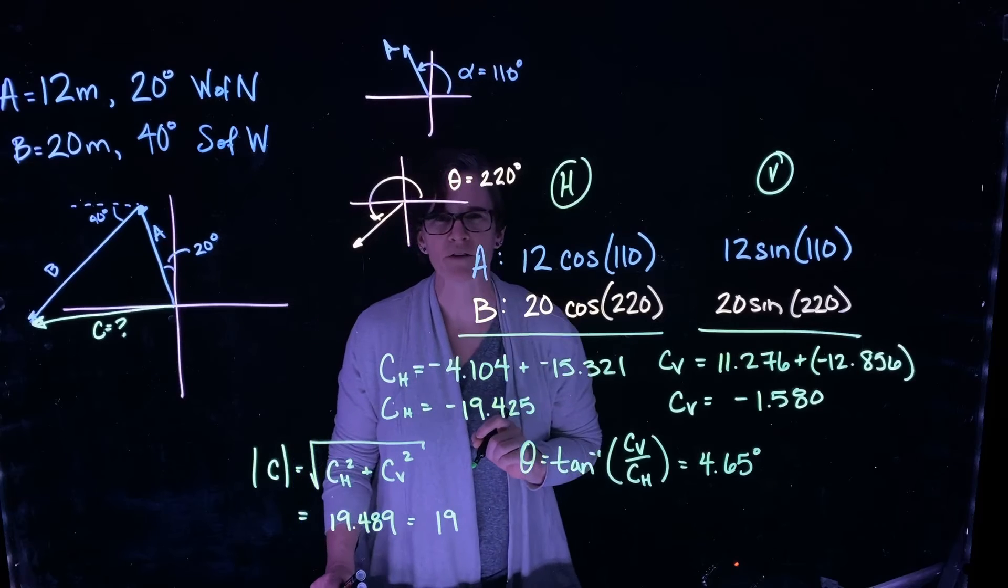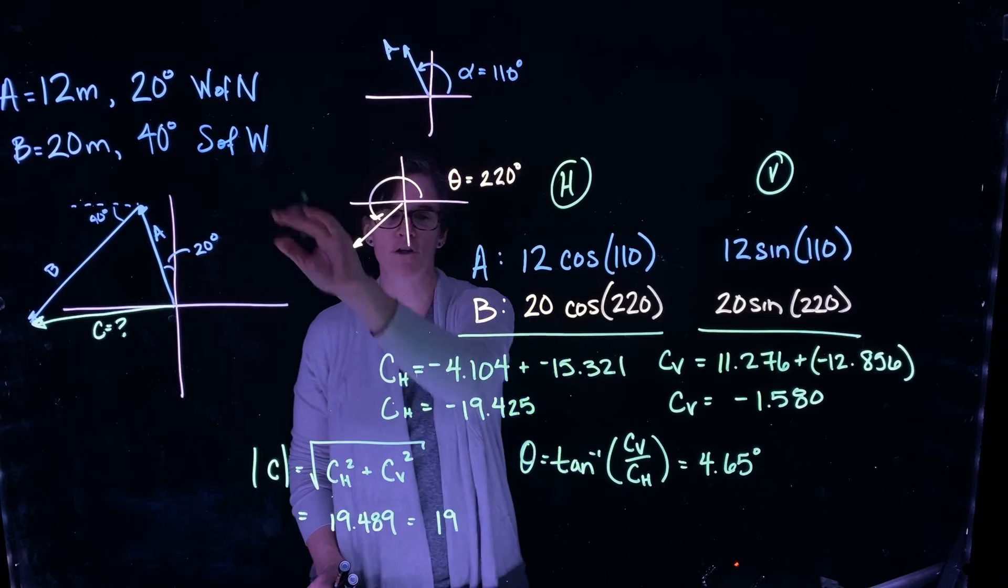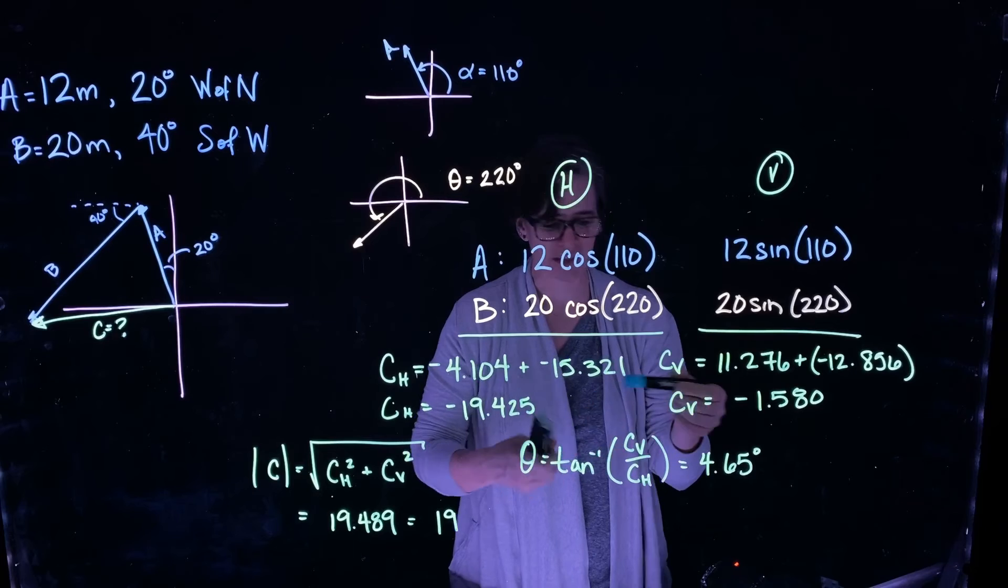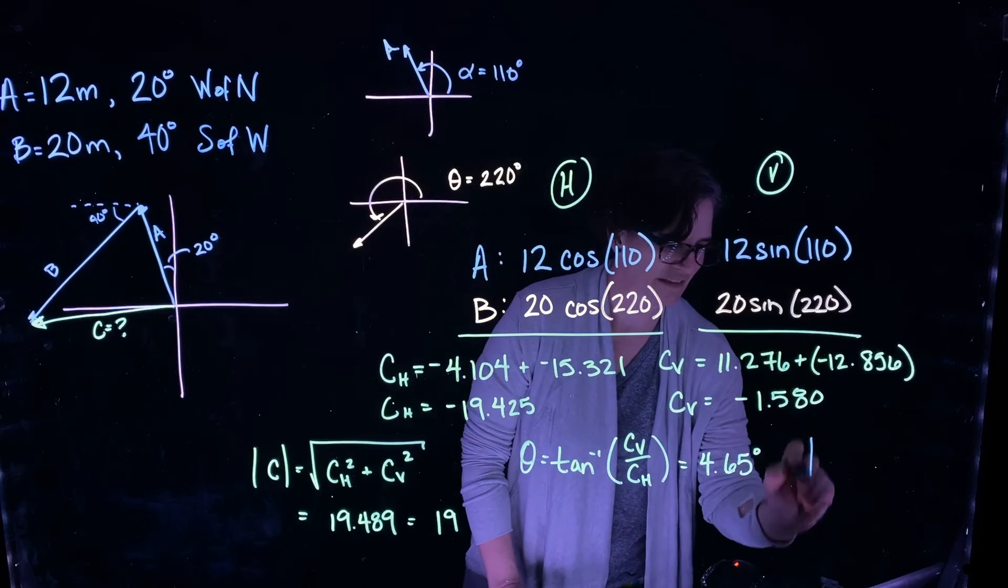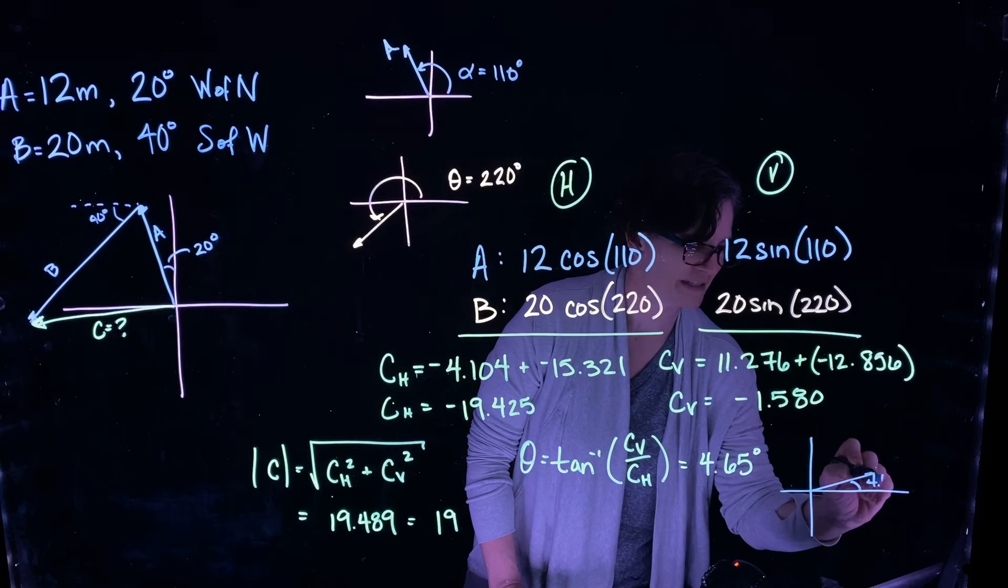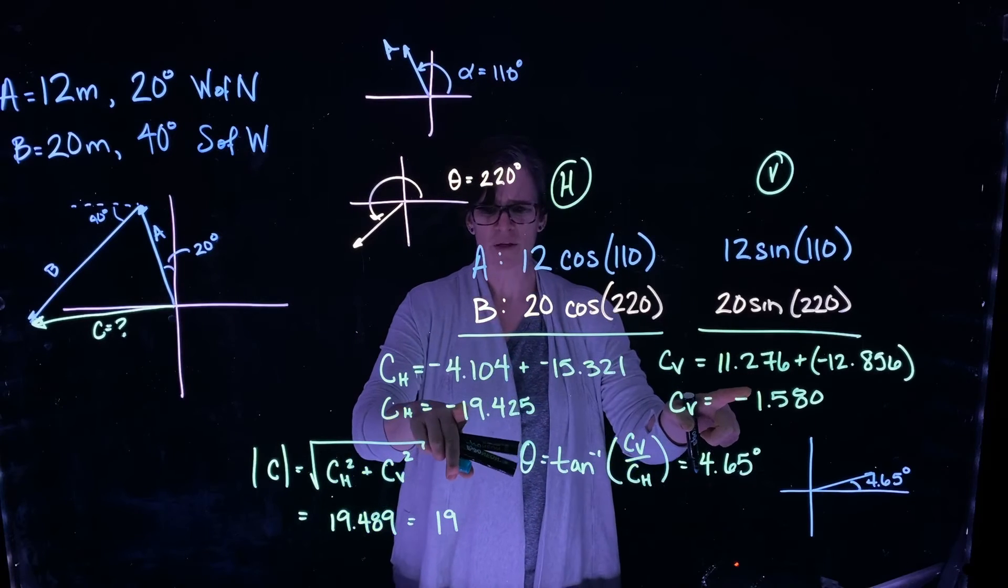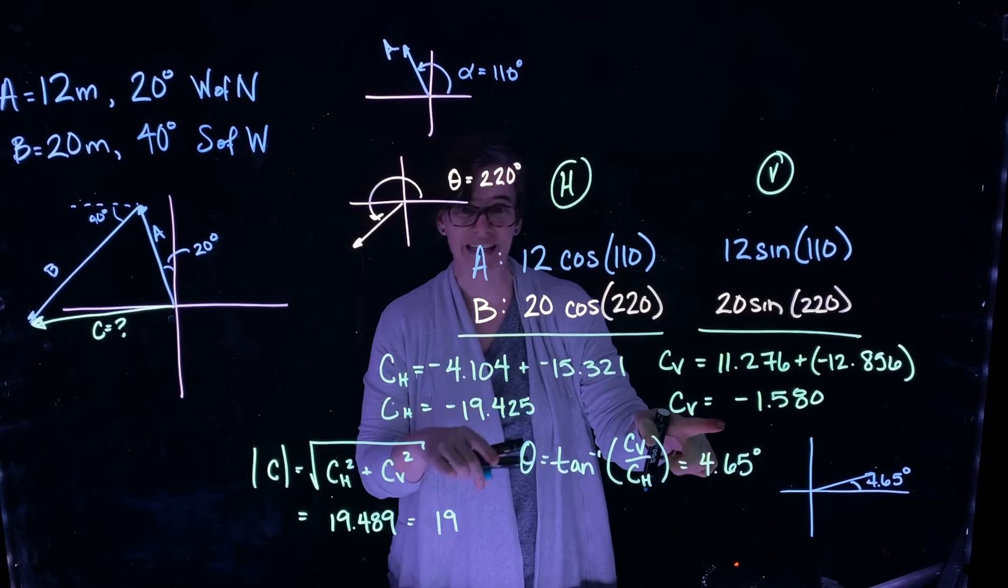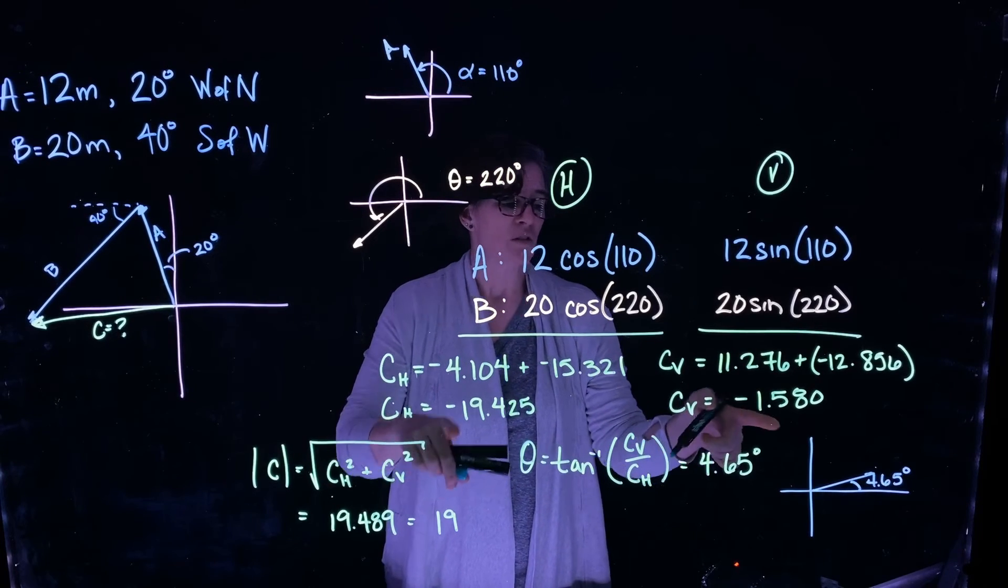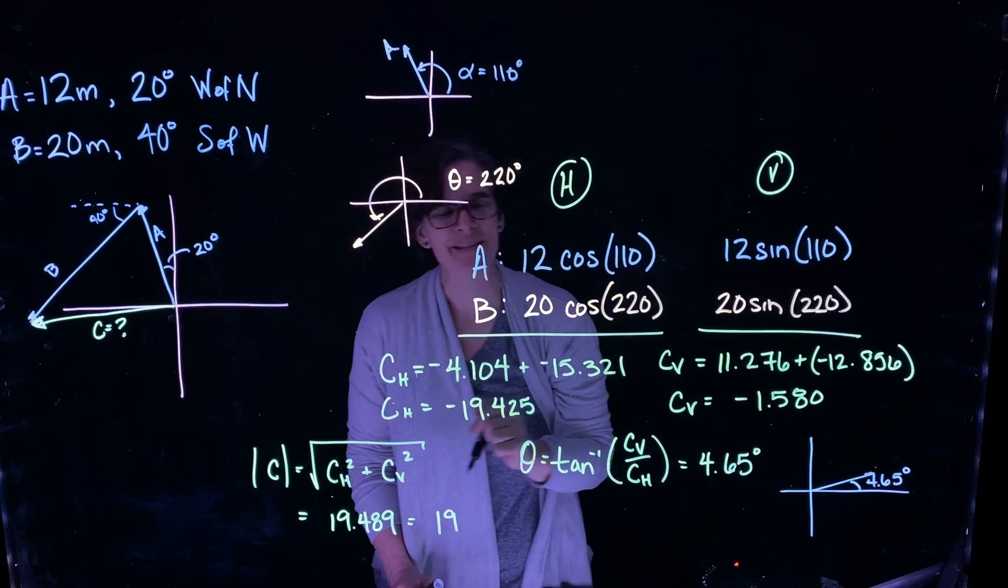Now here's where we have to be careful. We have to remember that the tangent gives us angles in the first and fourth quadrant. Well, this is actually telling me that the angle of my resultant vector is here, 4.65 degrees, pointing up and to the right. But we know it's pointing down, because I have a negative vertical component, and to the left, because I have a negative horizontal component. So it's really along the same line, but pointing in the opposite direction.